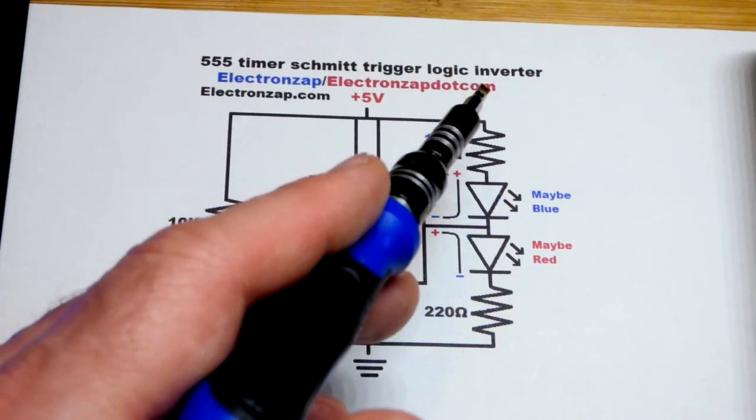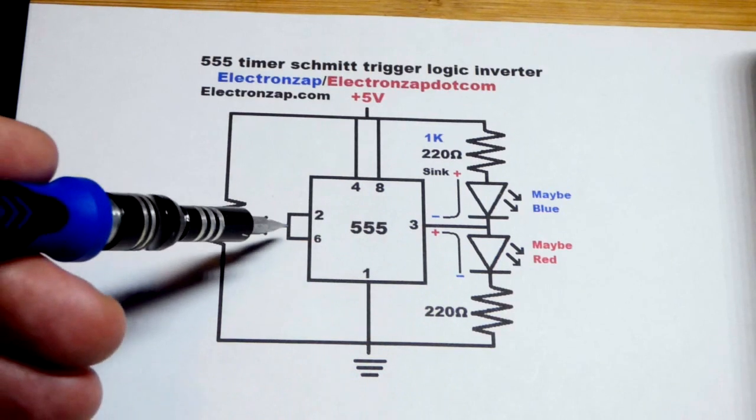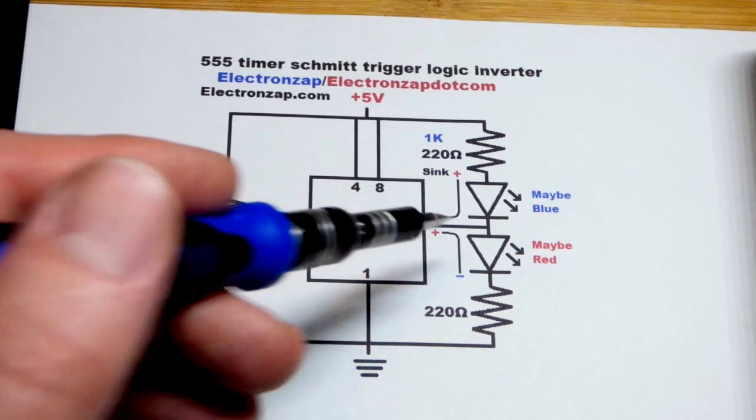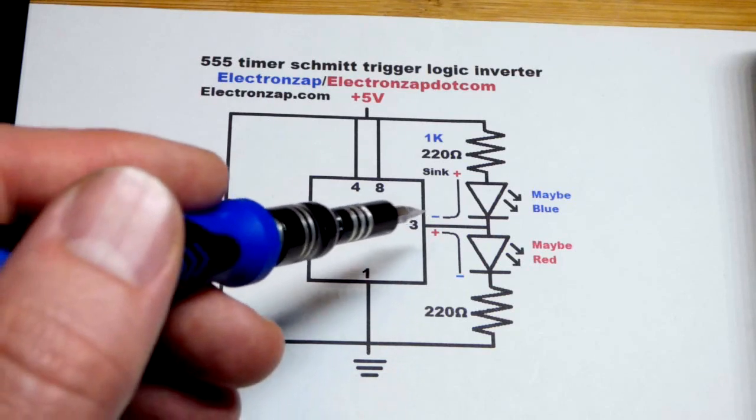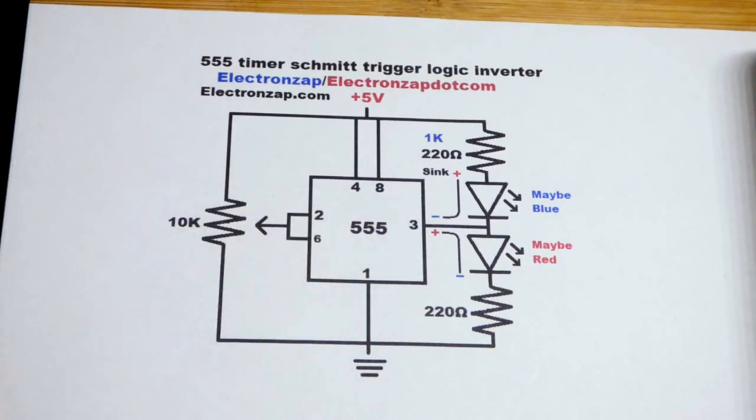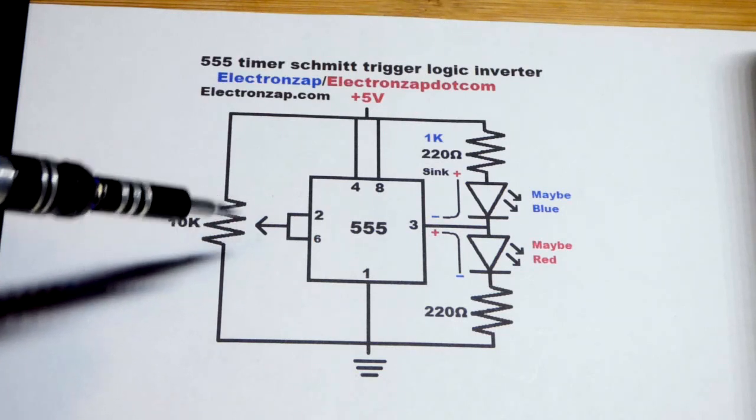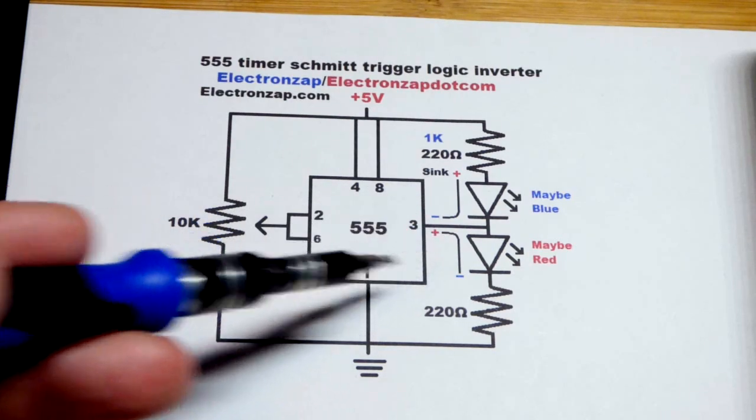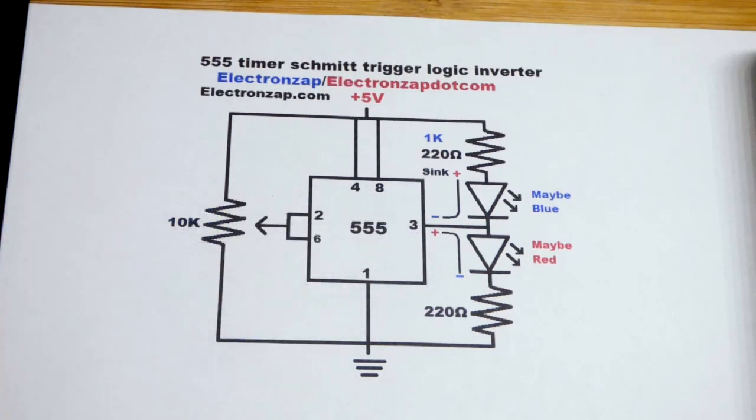So that's why it's an inverter. The input signal, if it's low enough, the output is high, and if it's high enough, the output is low. It's in the opposite direction. But there's that middle ground between one-third and two-thirds where the output is going to stay where it is, depending on where it was last set.